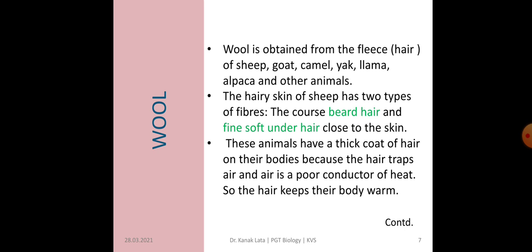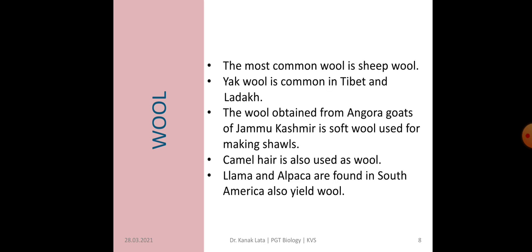These animals have a thick coat of hair on their body. This hair traps the air, and air being a poor conductor of heat, the heat will not escape out. So this hair helps in keeping their body warm. The most common wool is sheep wool, but yak wool is common in Tibet and Ladakh because these animals are commonly found in those cold places.